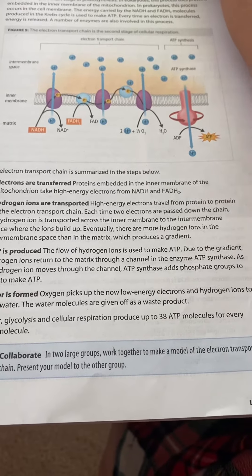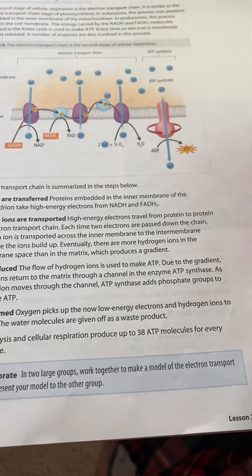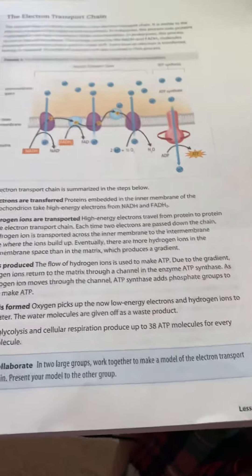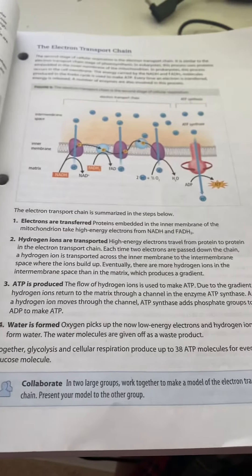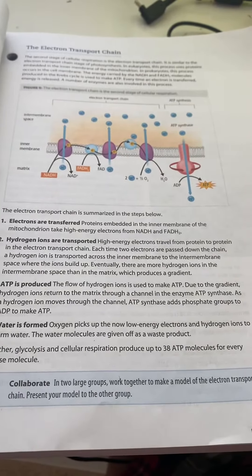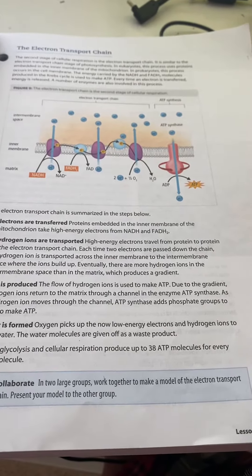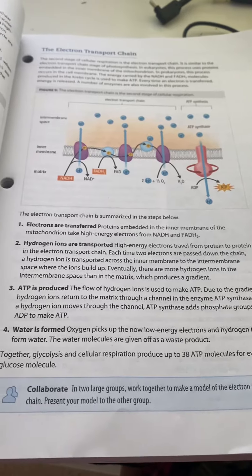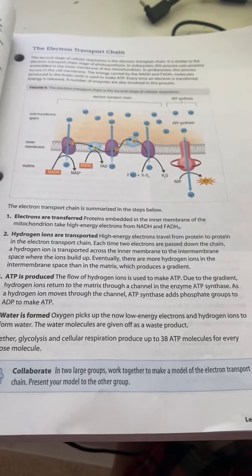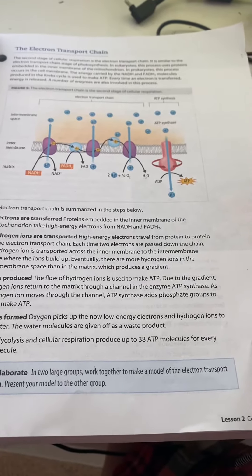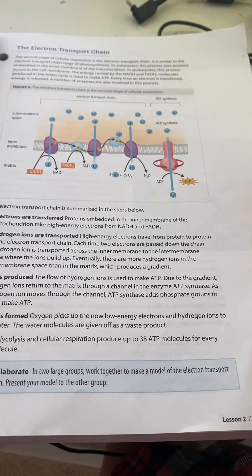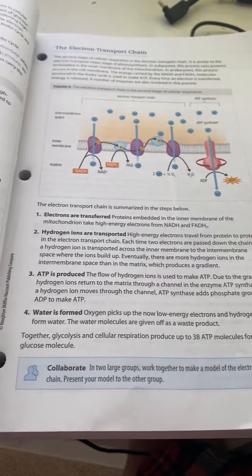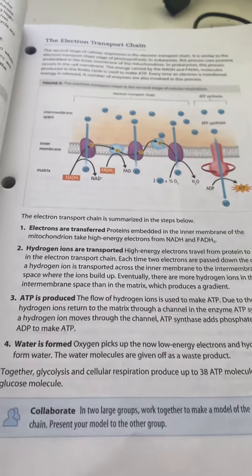Water is formed. Oxygen picks up the low-energy electrons and hydrogen ions to form water. The water molecules are given up as a waste product. Together, cellular respiration can produce 38 ATP molecules for every glucose molecule.